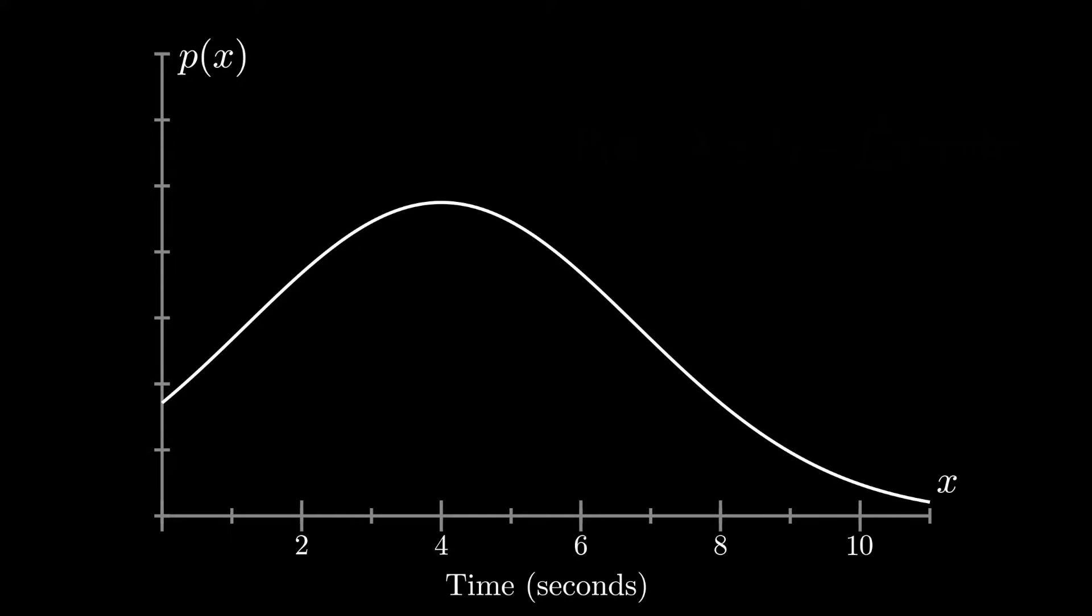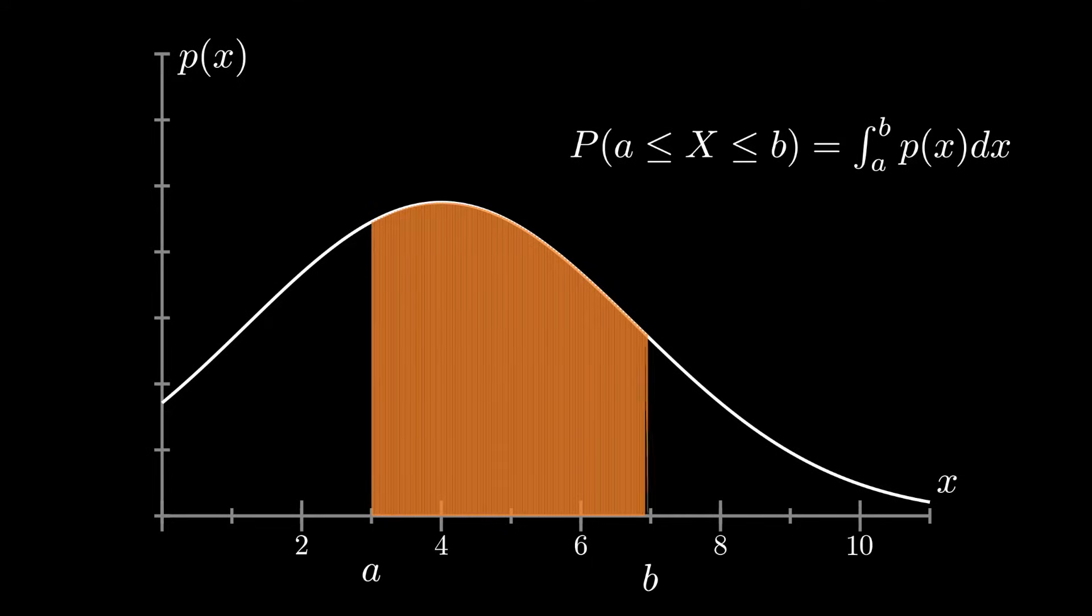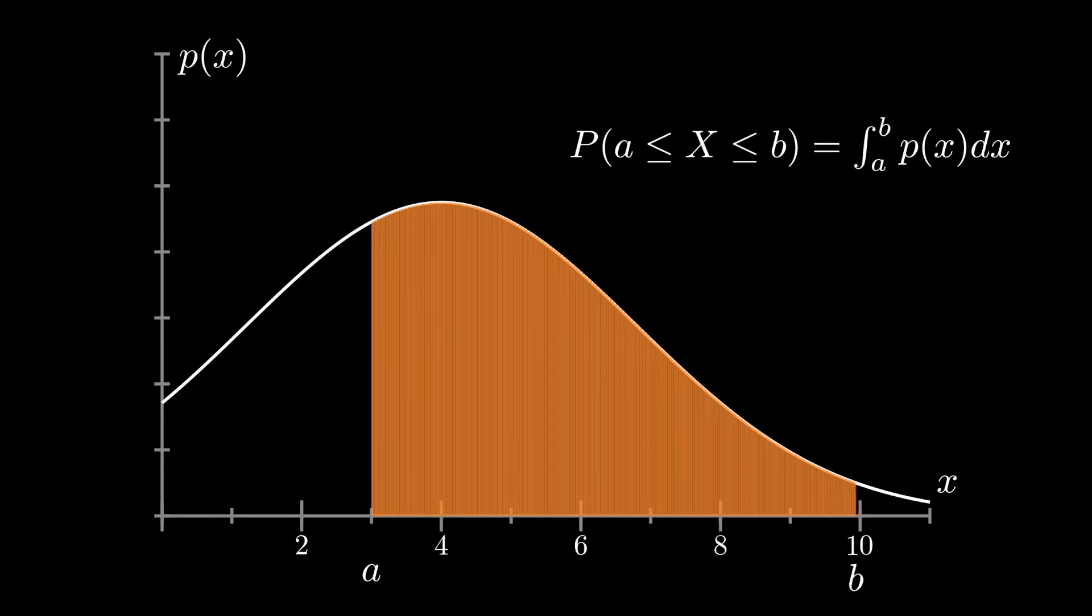Instead, the probability density function tells us how to evaluate probabilities over intervals. We say the probability of x being between values a and b is the integral of the pdf from a to b. For any interval of interest, we simply adjust the integral accordingly.